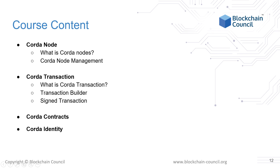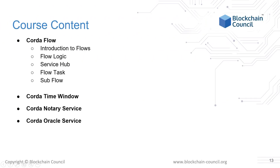The next key concepts are Corda contracts and Corda identity. Next is Corda flow, where we will cover flow logic, service hub, flow task, subflows, and flow management. Then we will discuss Corda time window and network services like notary services and oracle services.